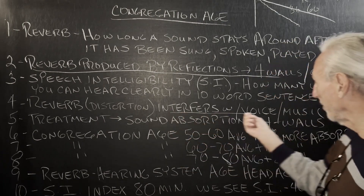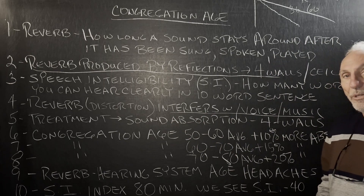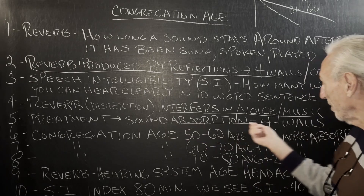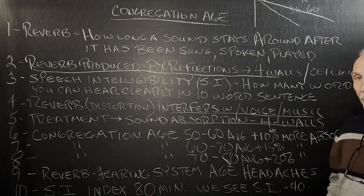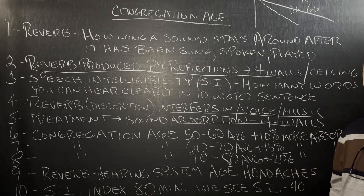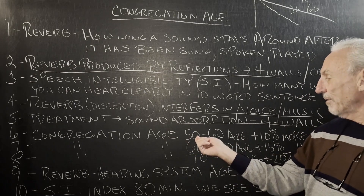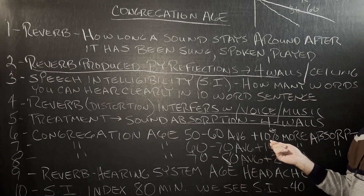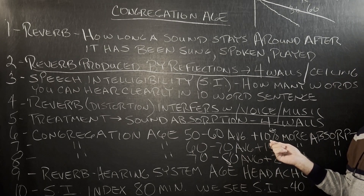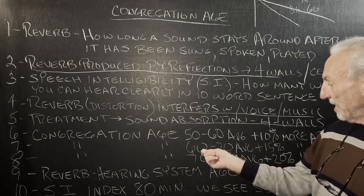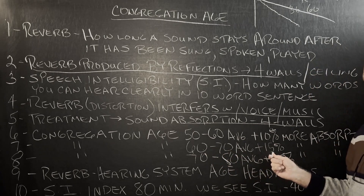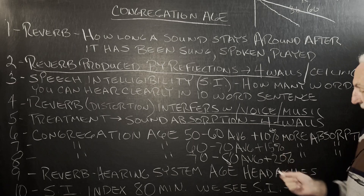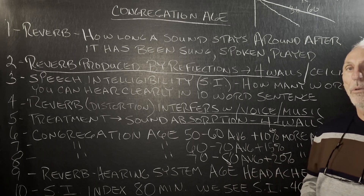Reverb is a distortion and it interferes with voice and music, and it has to be treated. We know how we treat it — we put absorption, starting with the four walls. Here's the variable I mentioned at the beginning: if the average age of the congregation is 50 to 60, we add 10% more treatment to the room to lower the times. If it's 60 to 70, we add another 15%. And if it's over 70, we add 20%. Those are the guidelines we go by.